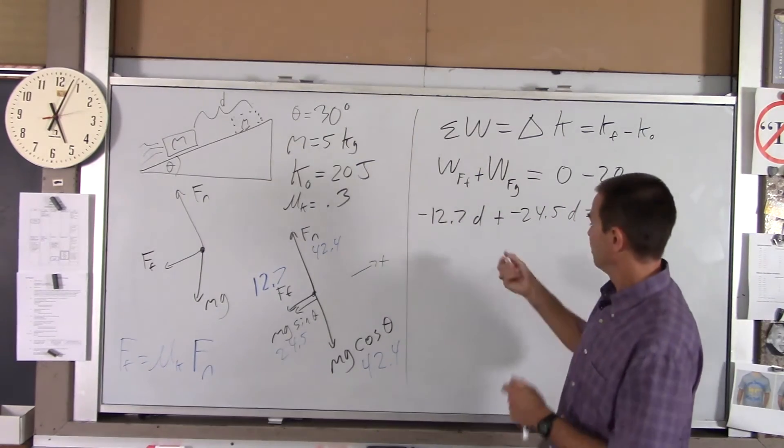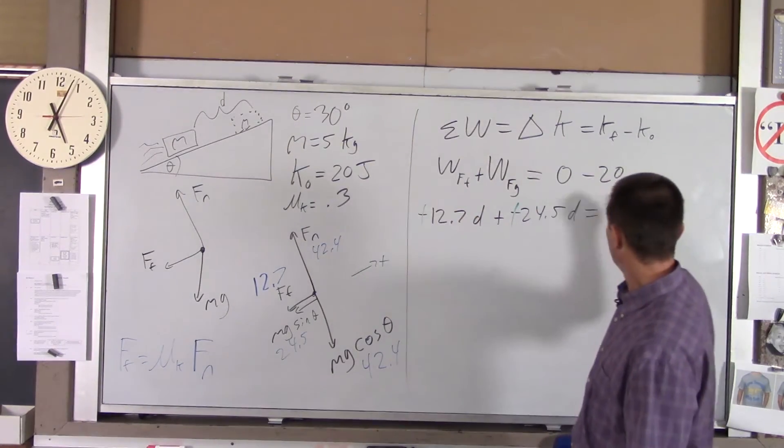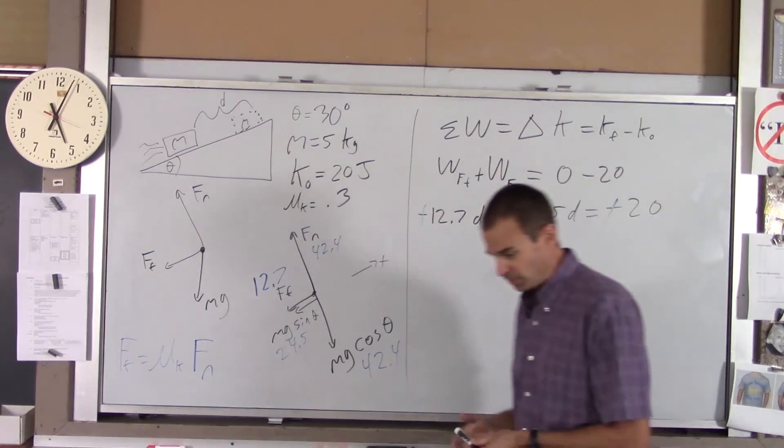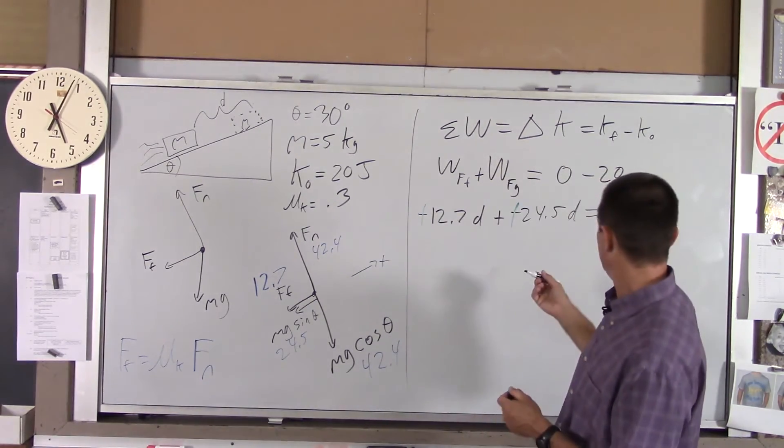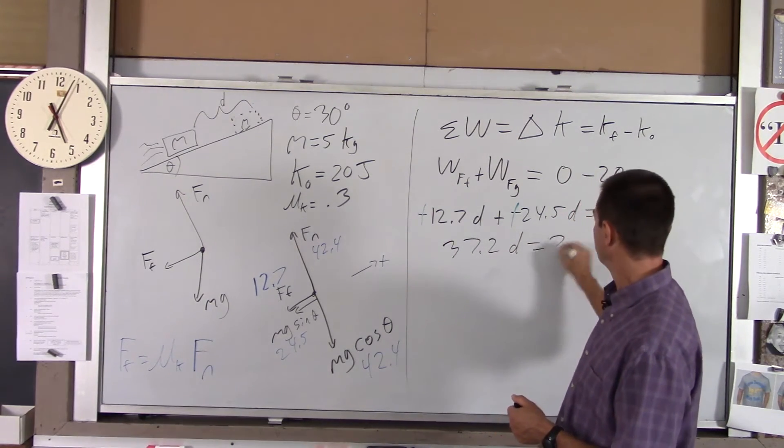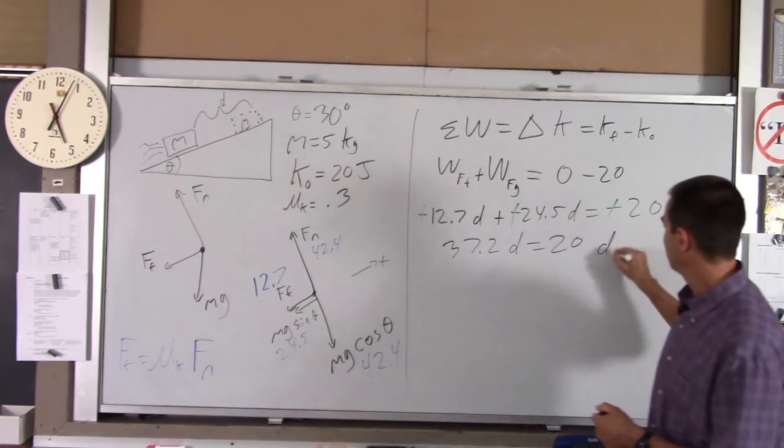That all equals negative 20. Well, next algebraic step, we can divide everything by negative one. Combine like terms, if you combine like terms, you get 37.2 d equals 20, and you've got your answer.